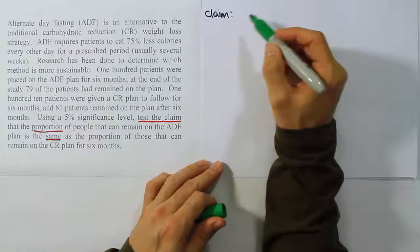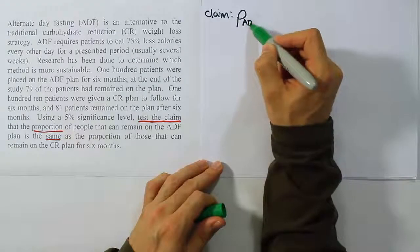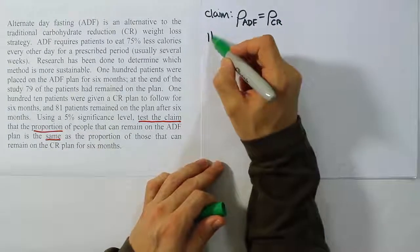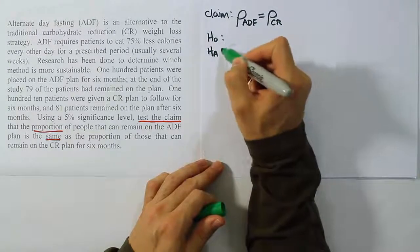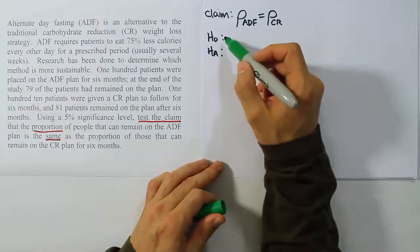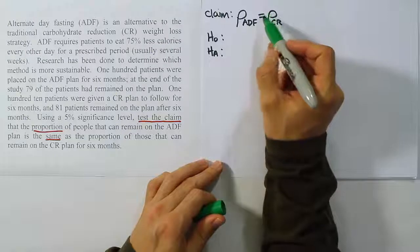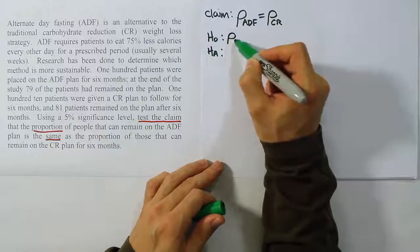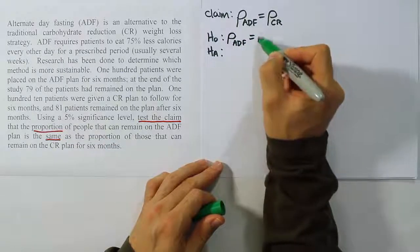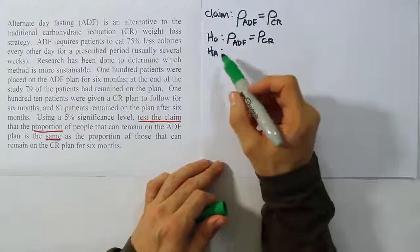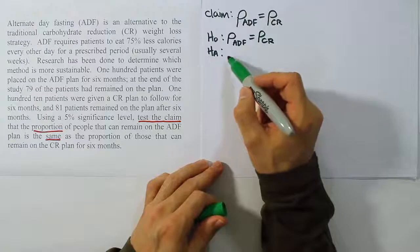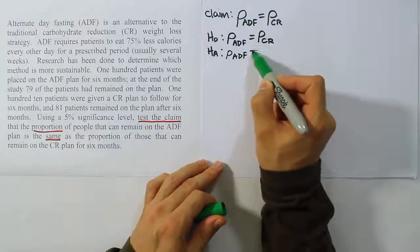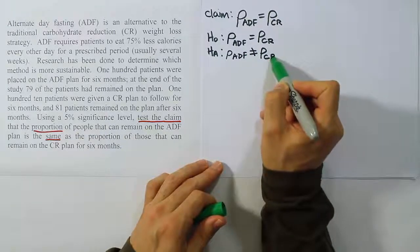Let's start out by coming up with our claim for the hypothesis test, which is always our first step. The claim is that the proportion for the ADF group is equal to the proportion for the CR group. Now H0 and HA. The alternative hypothesis and the null hypothesis are determined by looking at the symbol involved in the claim. If that's an equal sign in the claim it means it's the same as H0 because H0 is the hypothesis that has equality. The alternative hypothesis will use the not equal to symbol because we have to have the opposite of what H0 has.